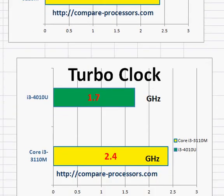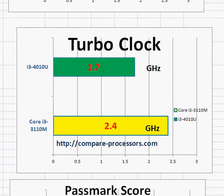Both of them do not have a turbo clock — I3 does not have turbo clock. The I5 processor has the turbo features.